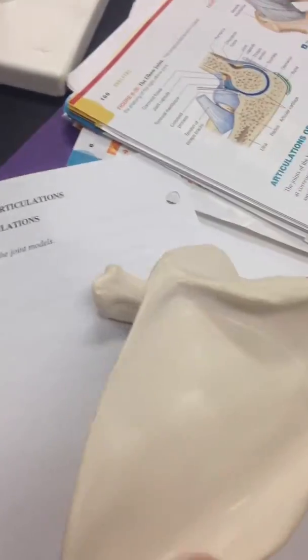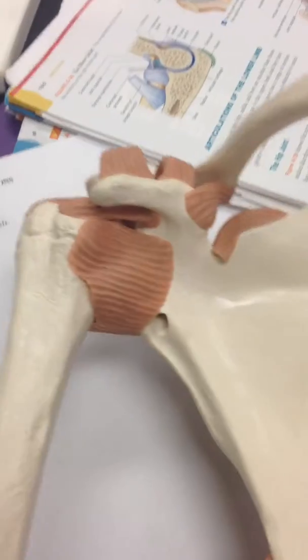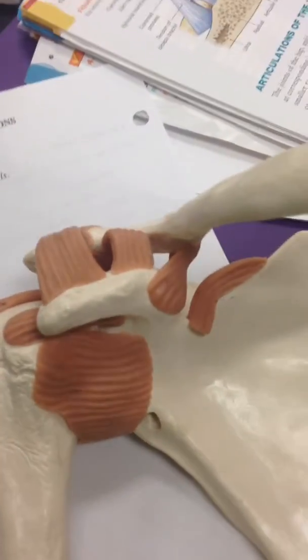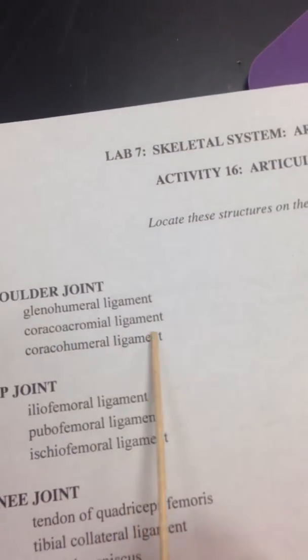It's also on the back, right here. Then we have the coracromial, it's hard to pronounce, the coracromial ligament,